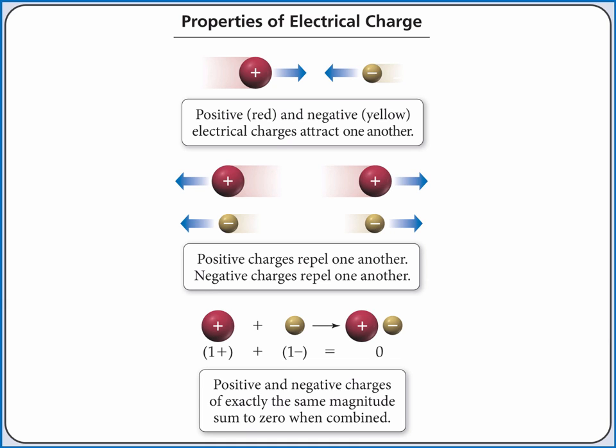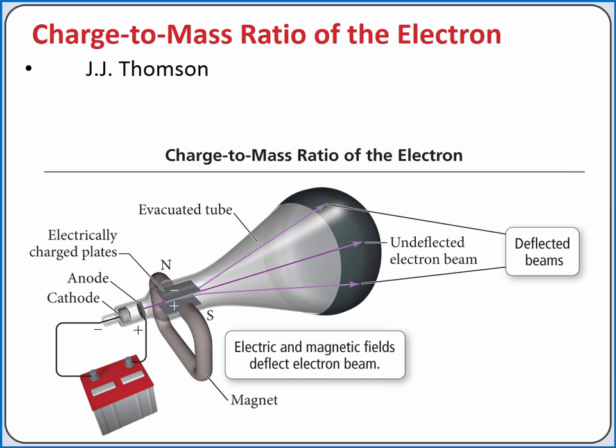In studying the atom, early scientists applied what they knew about the properties of electric charge. For example, opposite electric charges attract and like electrical charges repel. And a positive and negative electrical charge of equal magnitude will cancel each other out, so that the system is overall neutral.